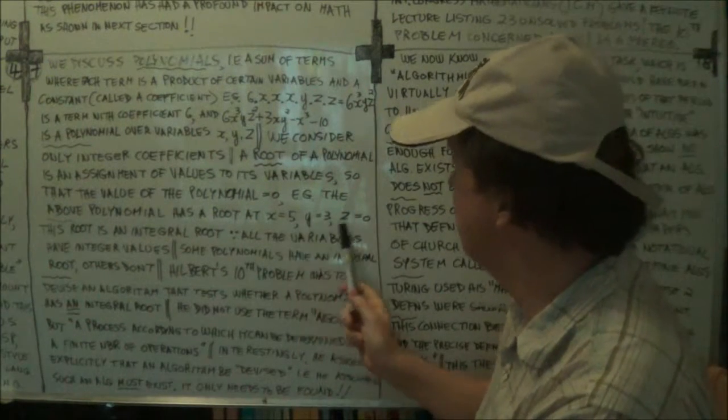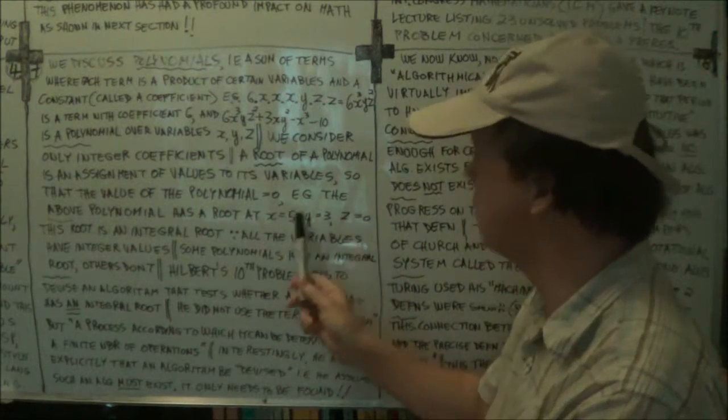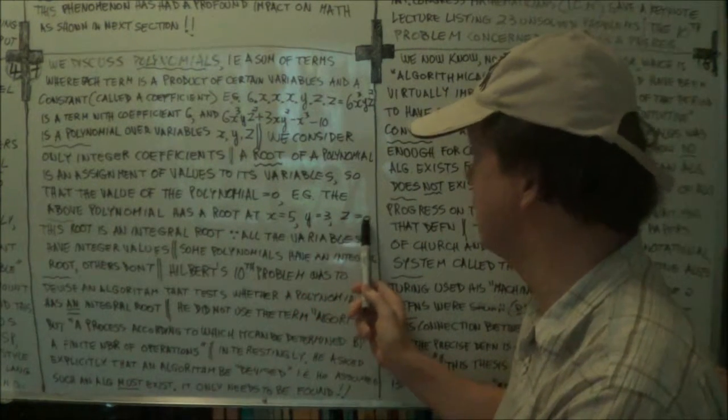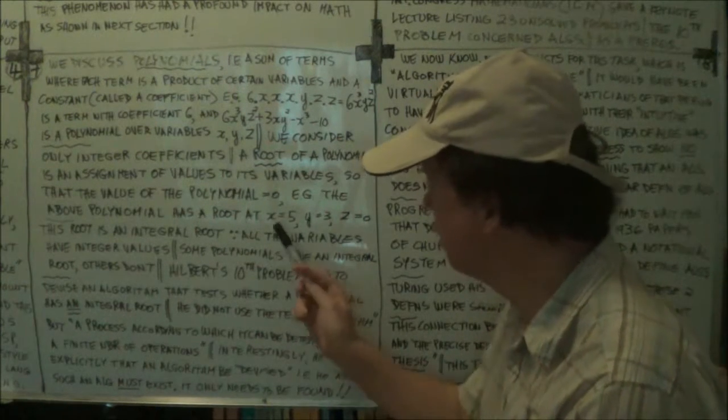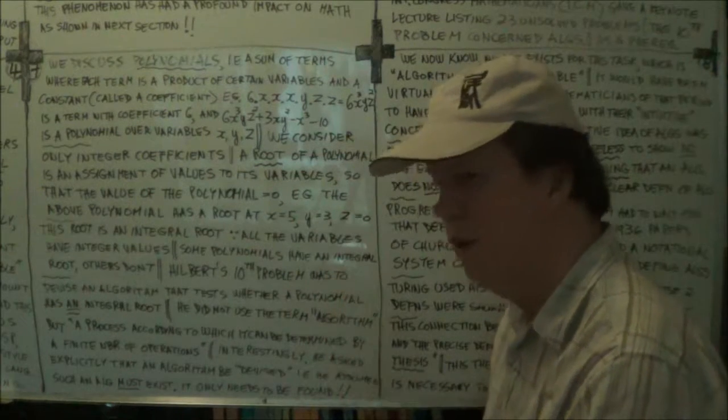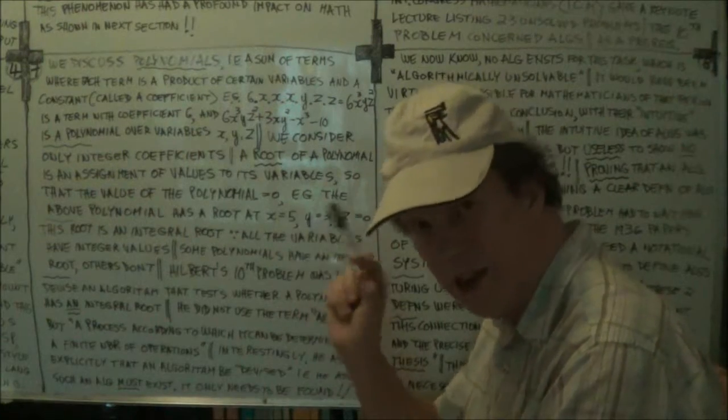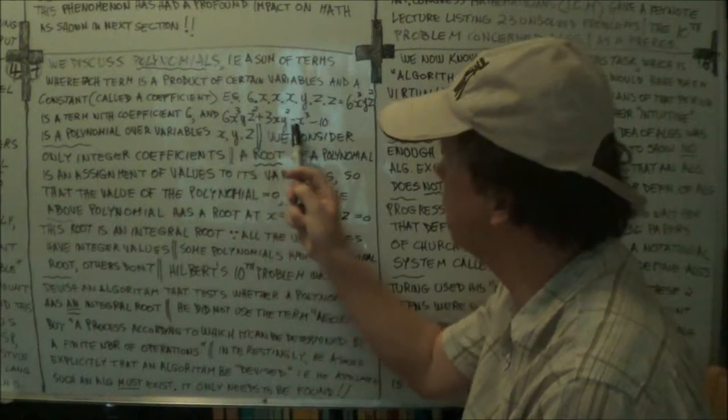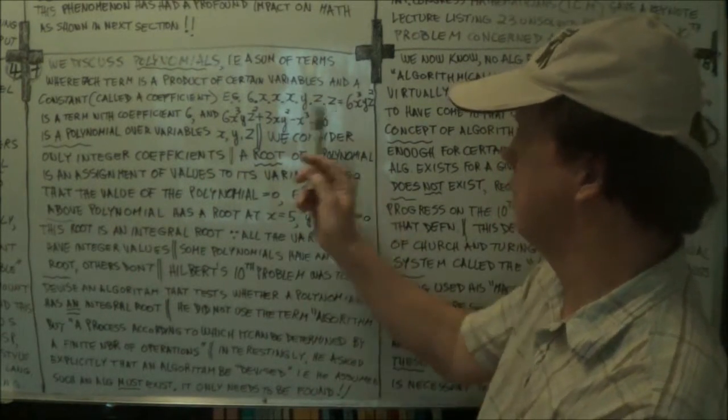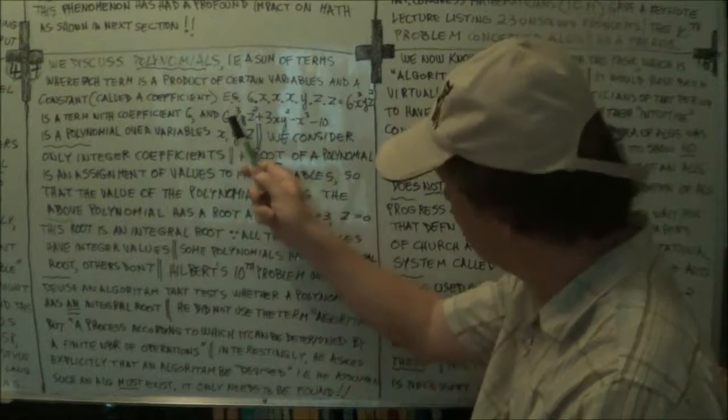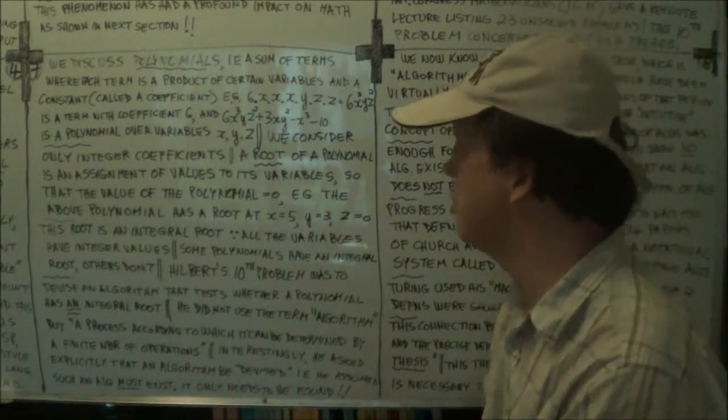So these, this, this is a root, you know, this, this set of values. X is five, Y is three, and Z is zero. And it's an integral root, meaning, meaning the solution of these, you know, the variables here, the integers. And when you plug in those values, the integer values, into the polynomial equation, so it's so root.